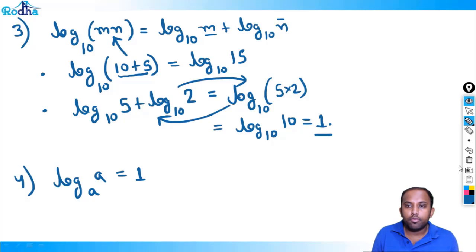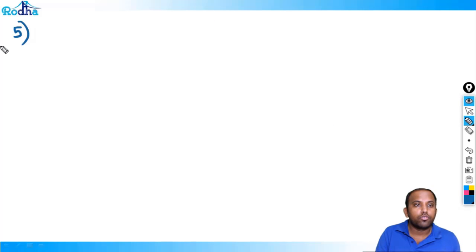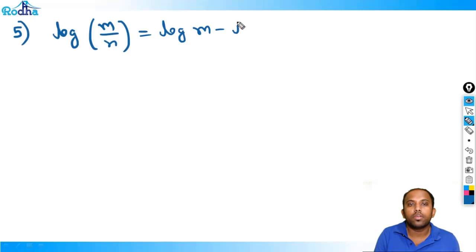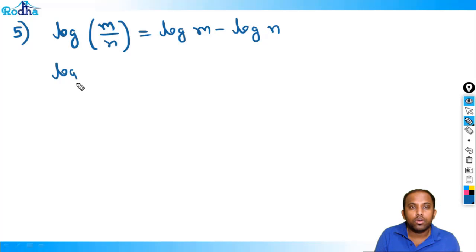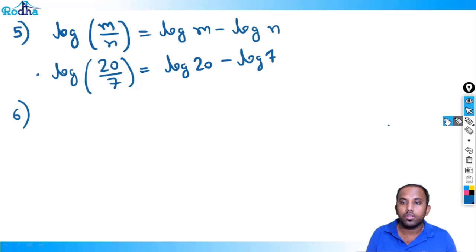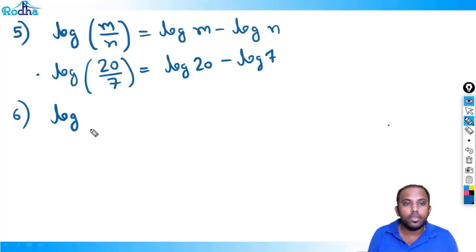Fifth property of log: division. log(m/n) equals log(m) minus log(n). In multiplication it was addition; in division it is subtraction. For example, log(20/7) equals log(20) minus log(7). Any base can be applied here.